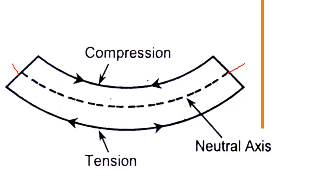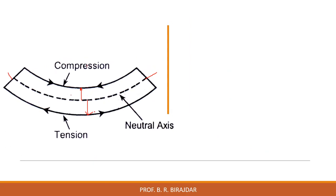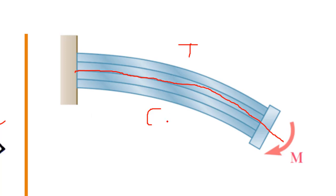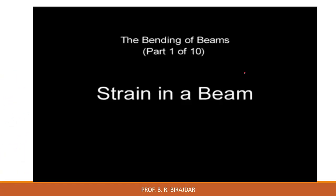The neutral axis is at the neutral layer. Moving toward the upper extreme fiber gives maximum compressive stress, and moving downward to the outermost lower layer gives maximum tensile stress. That is the case for a simply supported beam. For a cantilever beam, the reverse happens: the upper part is elongated so tensile stress develops on top, and compressive stress develops at the bottom. The neutral axis is in between, with tensile stress above and compressive stress below.